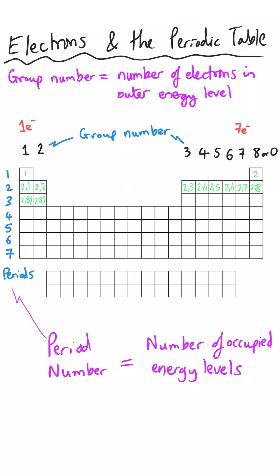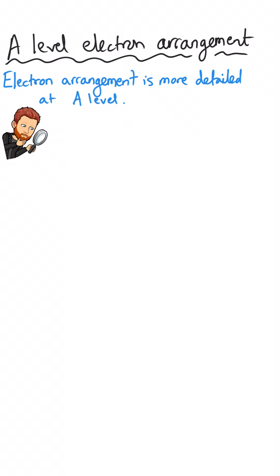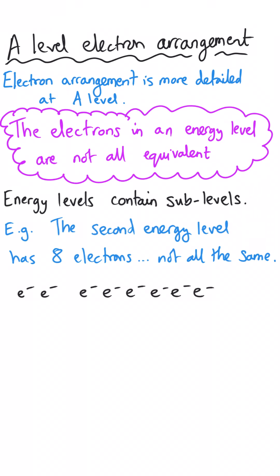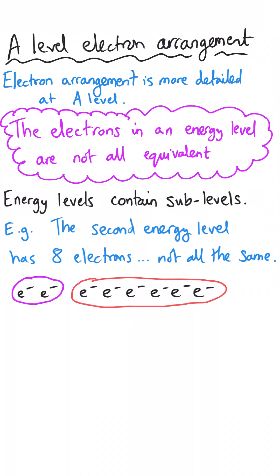By far the biggest difference you'll encounter between A-level and GCSE chemistry is what happens when we zoom in on the model of atomic structure. Electron arrangements are different at A-level because the energy levels contain electrons that are not all equivalent — the energy levels are actually split into what are called sub-levels or sub-shells. If we consider just the second electron shell, the eight electrons in that shell aren't all equivalent: two of them are equivalent to each other, but six are quite different. So we need a new language to refer to these electrons.